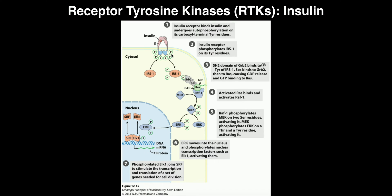The insulin receptor can also phosphorylate tyrosines on other proteins. The example here is IRS-1. IRS-1 comes over to the RTK, which phosphorylates it — you can see the product IRS-1 with several phosphates attached. The basic idea is that IRS-1 is going to activate another protein, which activates another, and so on, forming a physically connected chain whose goal is to activate RAF-1.